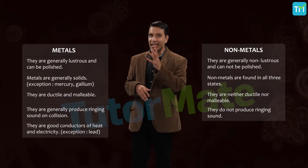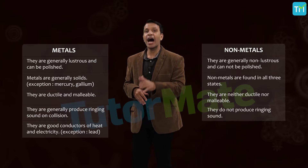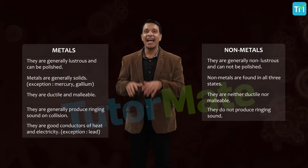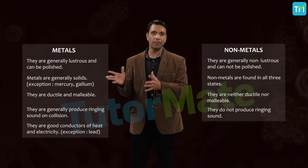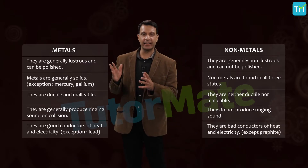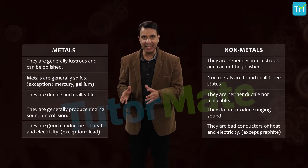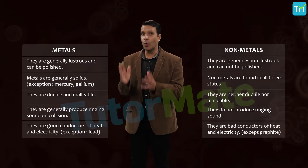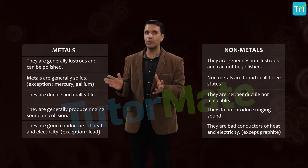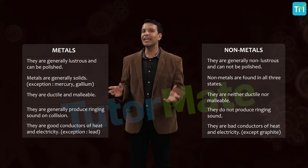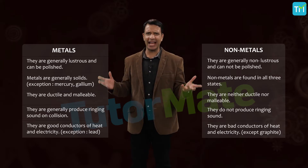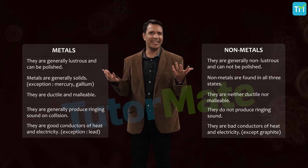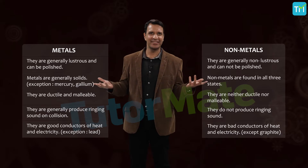There are exceptions here too — lead and mercury are poor conductors of electricity. And although non-metals are bad conductors of heat and electricity, the only non-metal that is an exception to this rule is graphite.